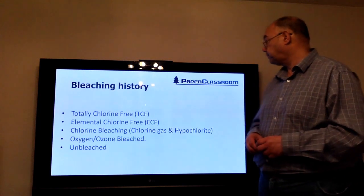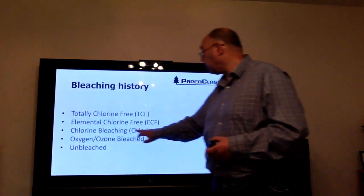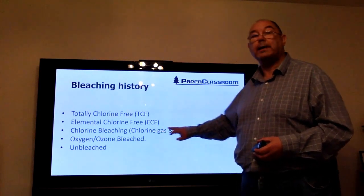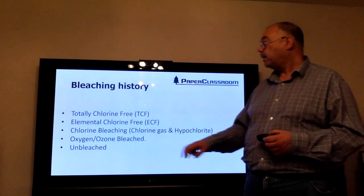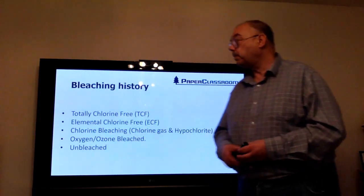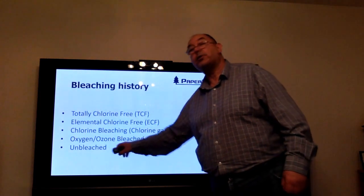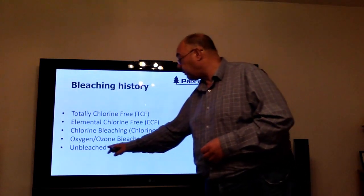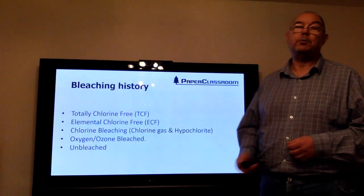There may be chlorine-bleached pulps where people use chlorine gas or hypochlorite, though you don't see very many of those these days. You may choose to do oxygen or ozone bleaching. Or you may choose not to bleach them at all and have an unbleached pulp — unbleached pulps have a big advantage because they are stronger than any of the bleached pulps.